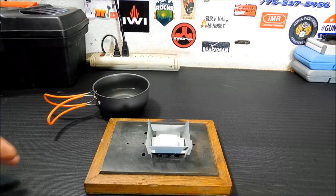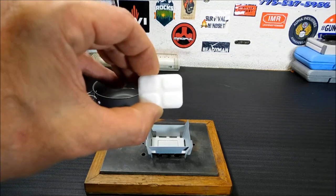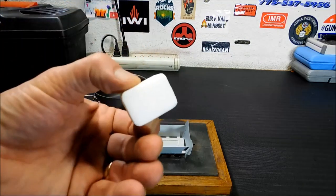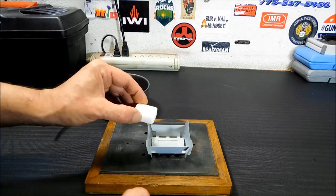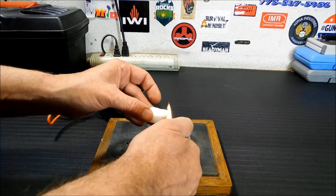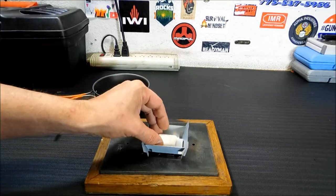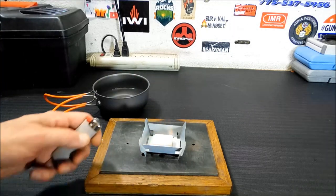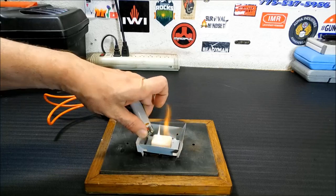All right, we got the Esbit tablet in there. If you notice, it's got like four little quadrants in it. I assume that's so you can break it into smaller pieces if you didn't need as much of a fire. But I'm going to start this one up. Let's see how that goes. These are brand new. There you go. That side's on fire now. You get the other side too, just in case it doesn't get over there. There we go.